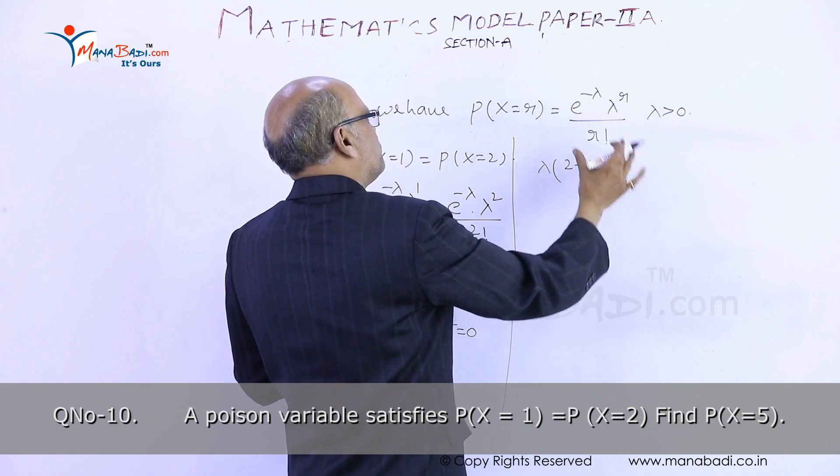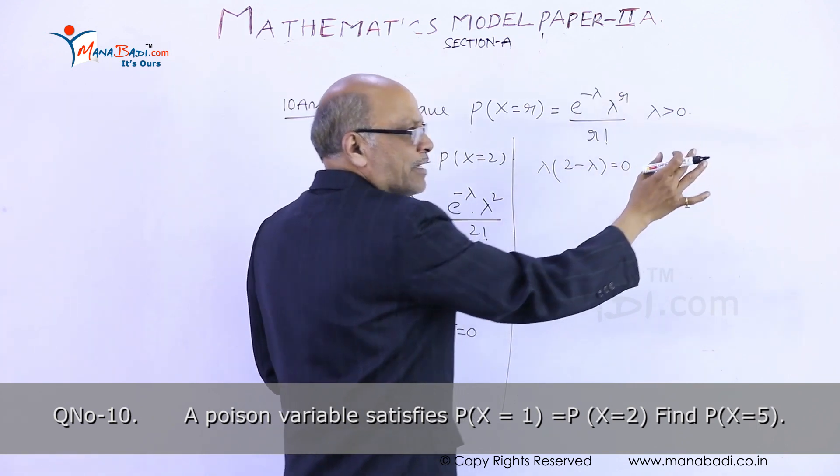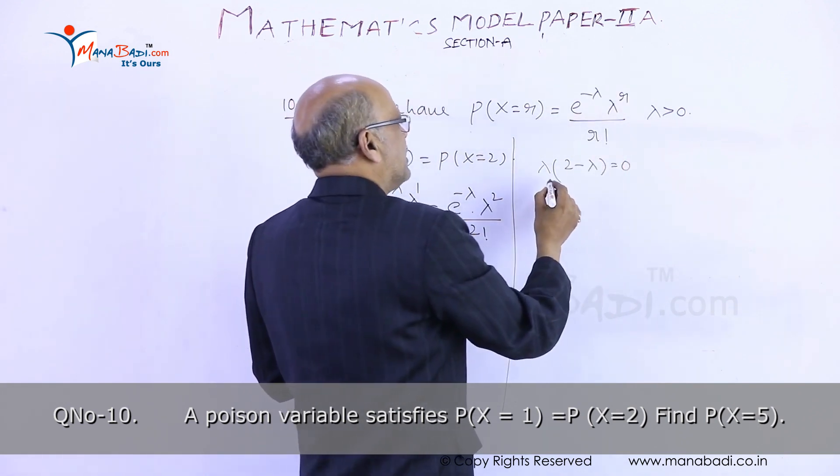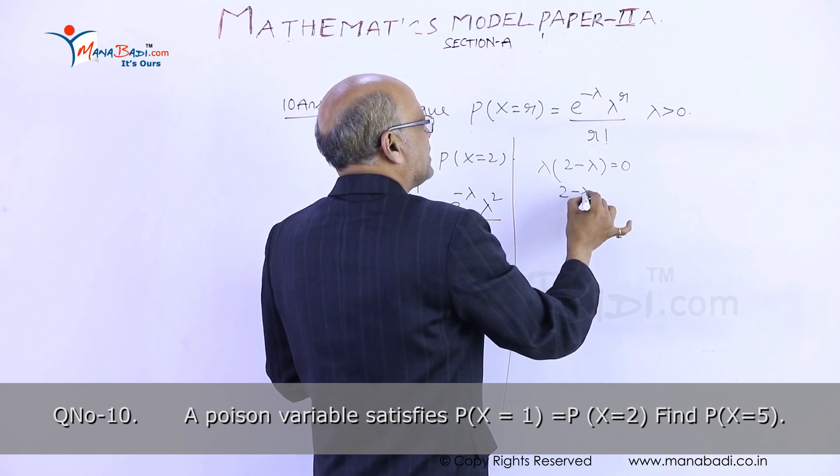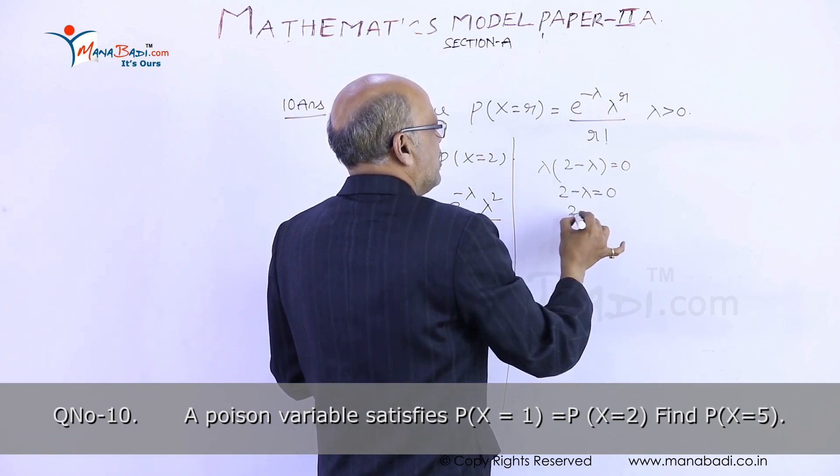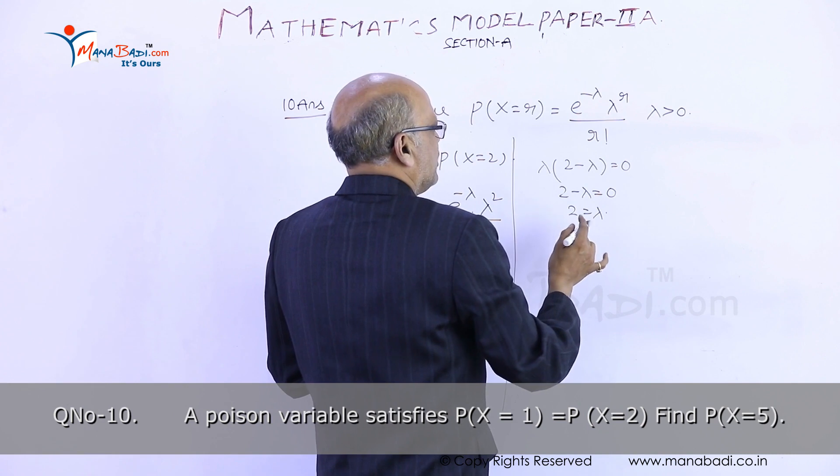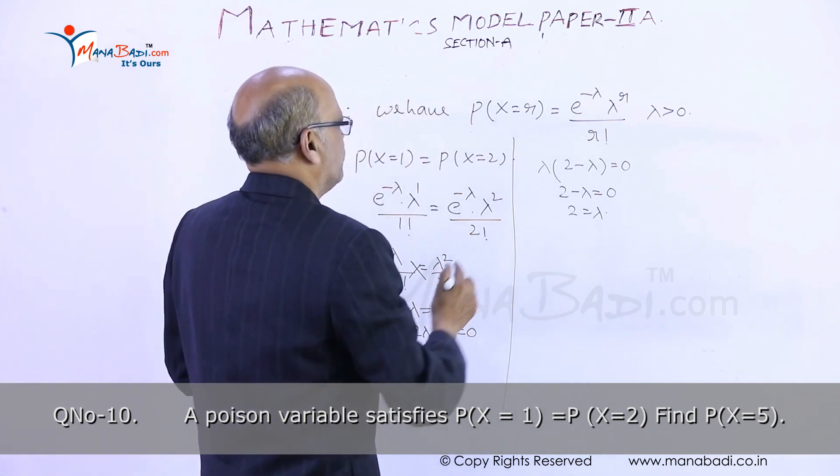In the Poisson distribution itself it is given that lambda is greater than 0, that means 2 minus lambda should equal 0. Therefore, 2 equals lambda. Now I got lambda value equal to 2.